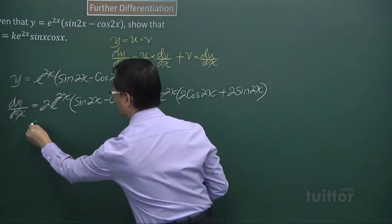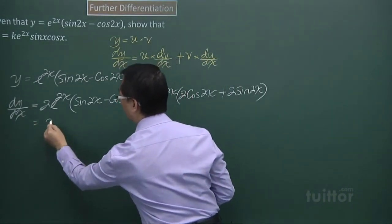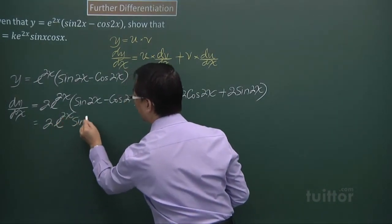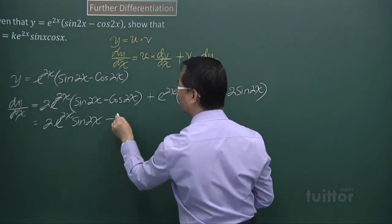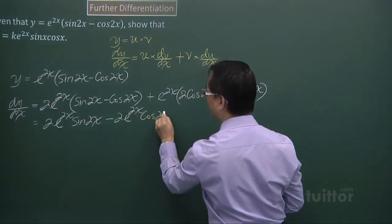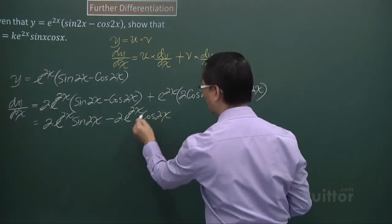Expanding the expression, here I have 2 e to the power 2x sine 2x, minus 2 e to the power 2x cos 2x.